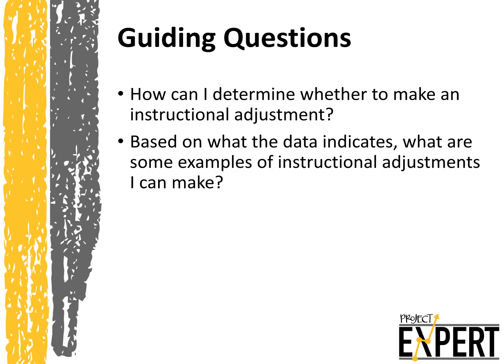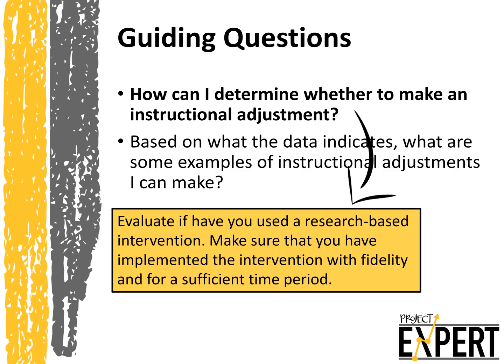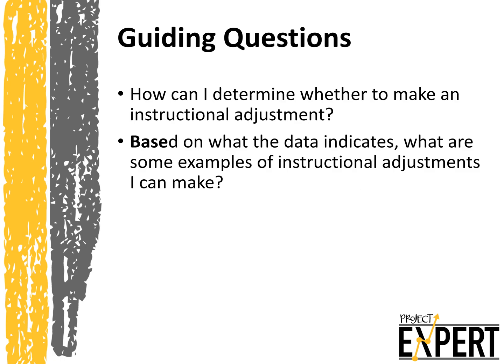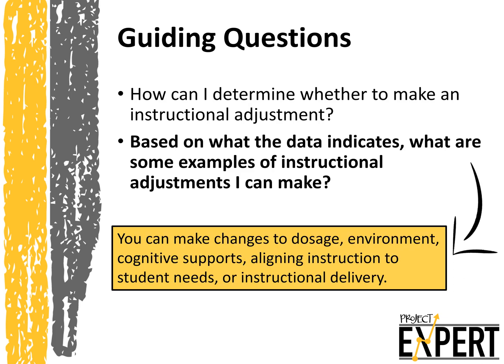Let's review our guiding questions. How can I determine whether to make an instructional adjustment? You can evaluate if you have used a research-based intervention, make sure that you have implemented the intervention with fidelity, and for a sufficient time period. Based on what the data indicates, what are some examples of instructional adjustments I can make? You can make changes to the dosage, environment, cognitive supports, aligning instruction to students' needs, or instructional delivery.